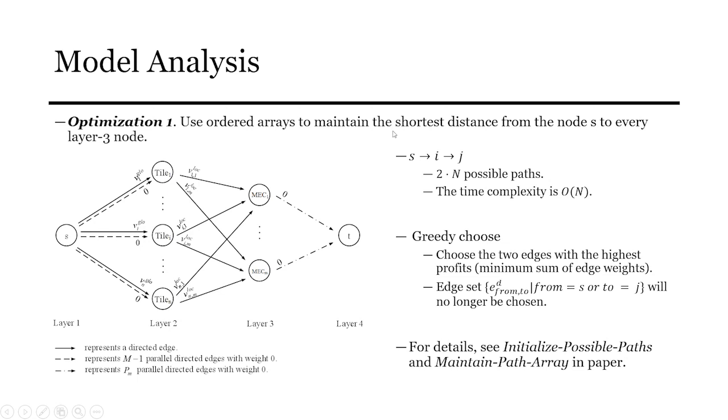Optimization 1. Use ordered arrays to maintain the shortest distance from the source node S to every layer 3 node. Assume in the augmenting path finding process, the path endpoint is S, and it needs to go forward two edges to reach MEC node G. There are two impossible paths, and if we check every tier node, the time complexity is O(M). However, the path will eventually select the two edges with the highest profits. It doesn't matter which the first two edges are chosen. The path endpoint always becomes node G, and node G becomes a visited MEC node, and this node set will no longer be chosen. In this case, it is better to pick the two edges that will generate the maximum profit. For details, see initialized-feasible-paths and maintain-path-array in paper.